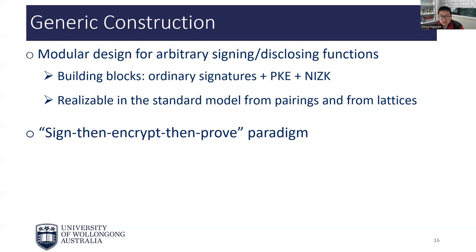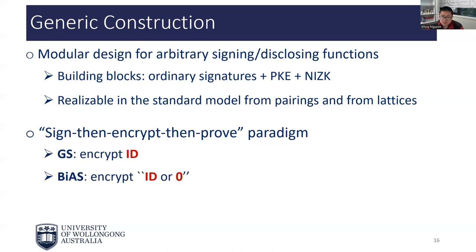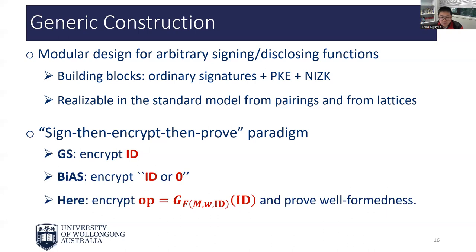The group manager certifies the membership by signing the user's identity. When issuing a signature, the user encrypts something and proves well-formedness of the ciphertext, as well as knowledge of a valid membership certificate. Note that in group signatures the user typically encrypts its full identity ID. In BAS, the ciphertext contains either ID or zero. Here, the main difference is that the ciphertext contains exactly what needs to be disclosed. Proving well-formedness of such a ciphertext in zero-knowledge is the most important step of the construction.